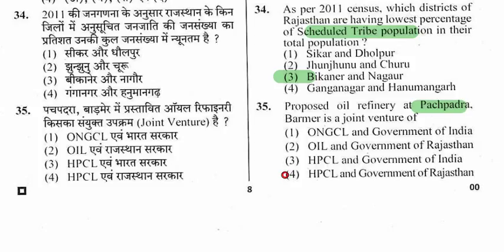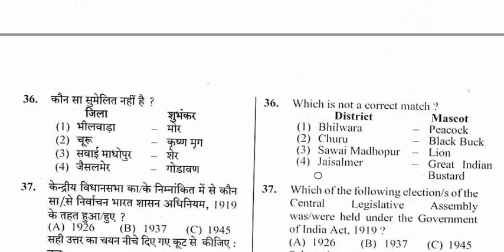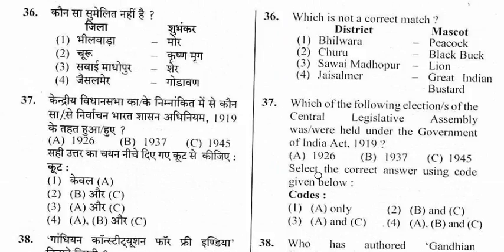Question 36: Which is not a correct match? The incorrect match is option 3. The rest are correct: Bhilwara district's mascot is Peacock, Churu district's mascot is Black Buck, and Jaisalmer district's mascot is Great Indian Bustard.